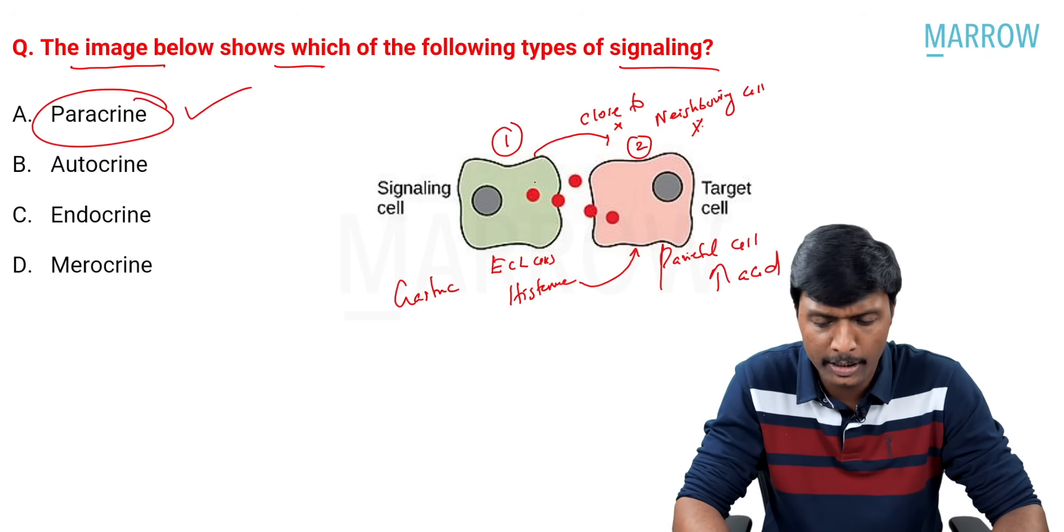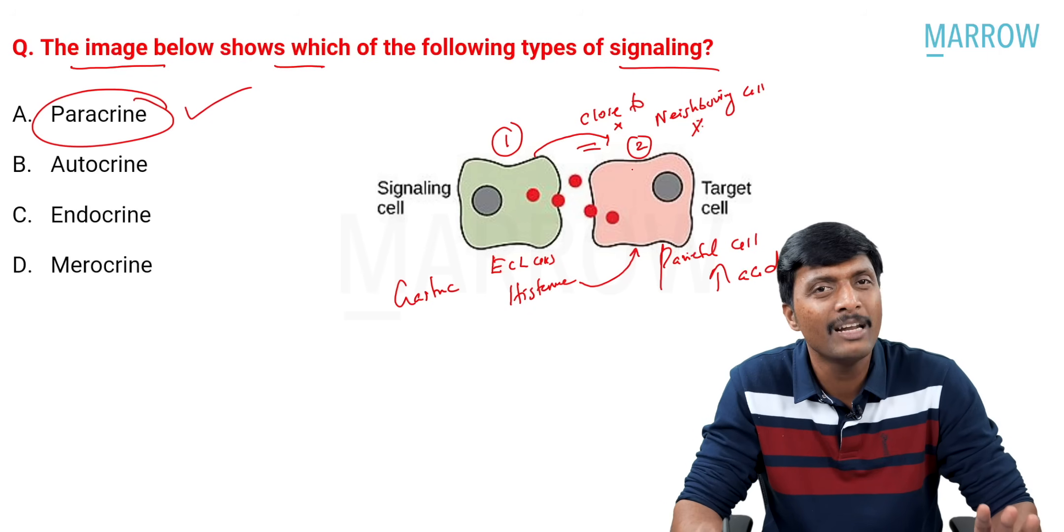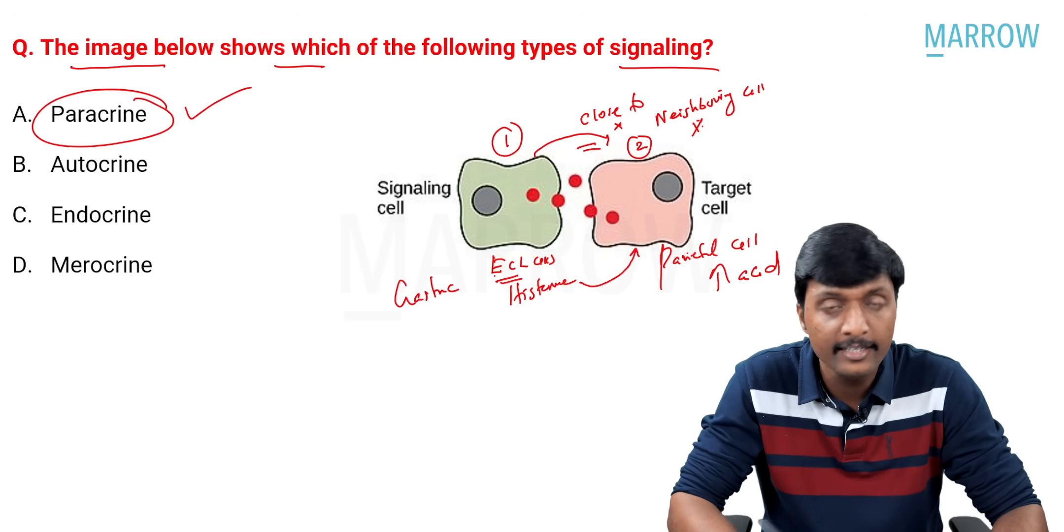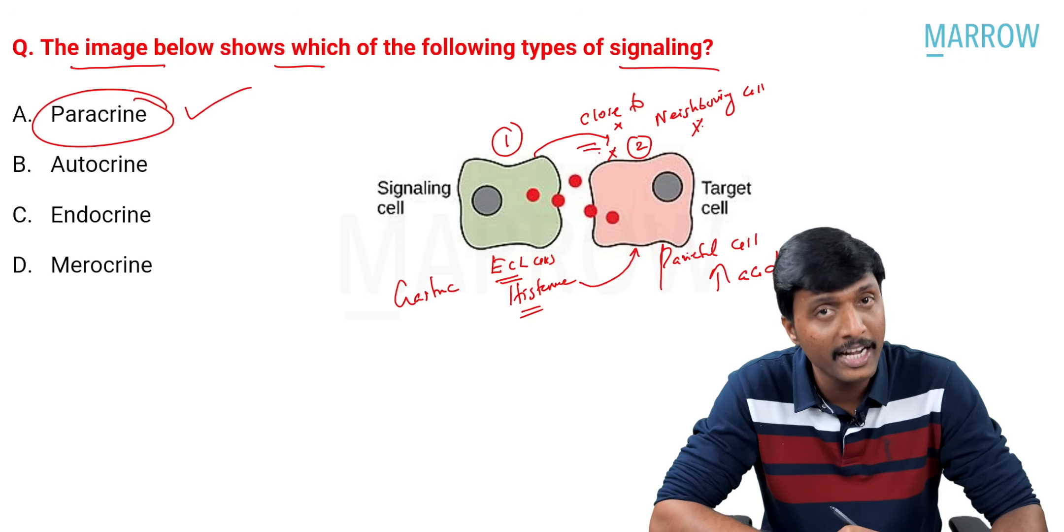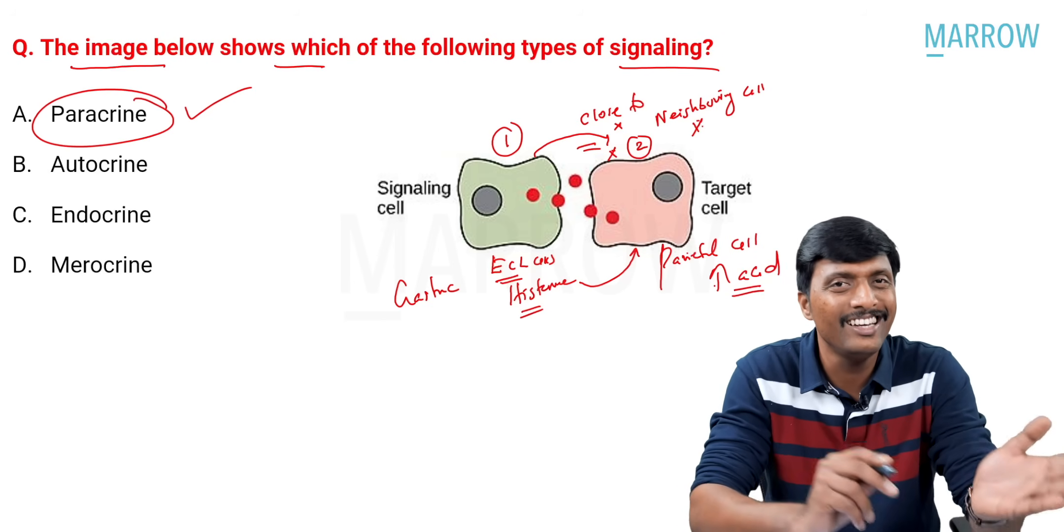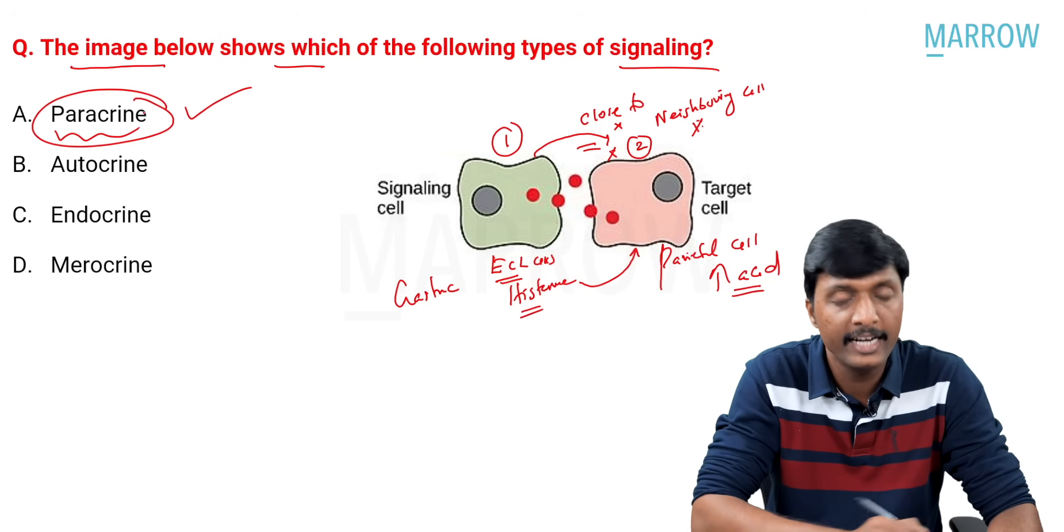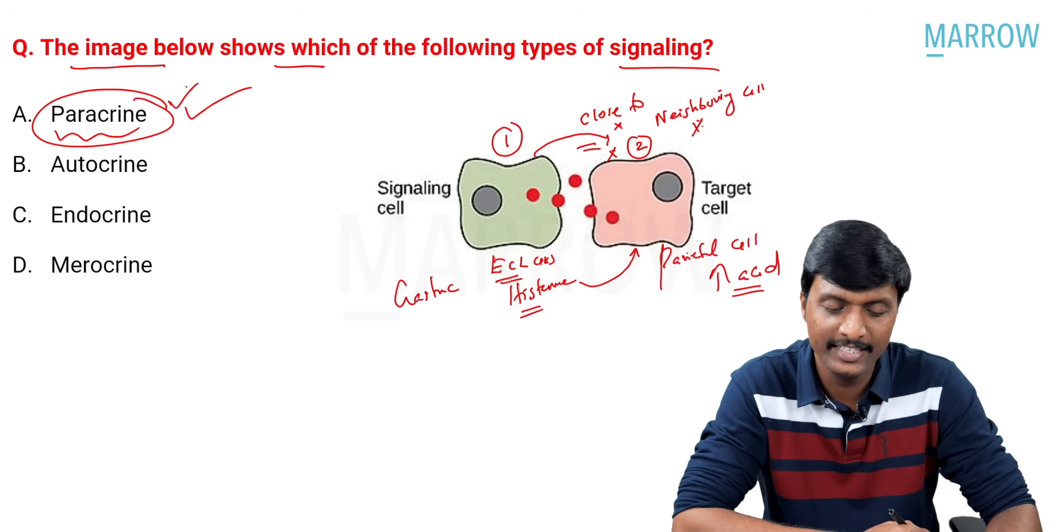So, this is a classical example. This is very close to each other. So, one cell influences a nearby neighboring cell. Consider this the first cell as ECL cells. Releases histamine. Going to influence the nearby parietal cell to release acid. So, a cell influencing a nearby neighboring cell is paracrine signaling. Important. The answer is paracrine. Next.